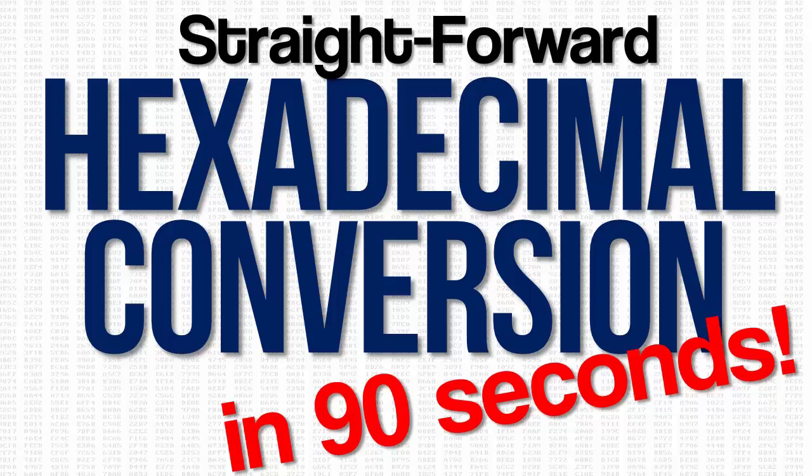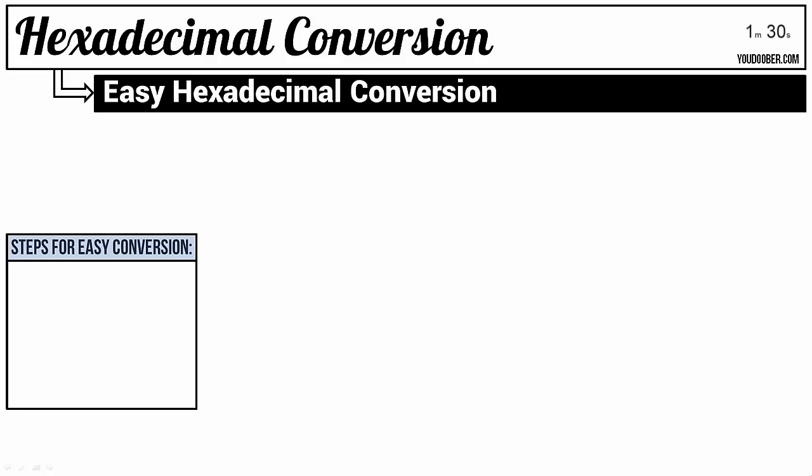Hey, this is John and I'm going to teach you hexadecimal to decimal conversion in 90 seconds. When we think about hexadecimal, we often think about the fact that it has 16 digits: 0 through 9 and A through F.